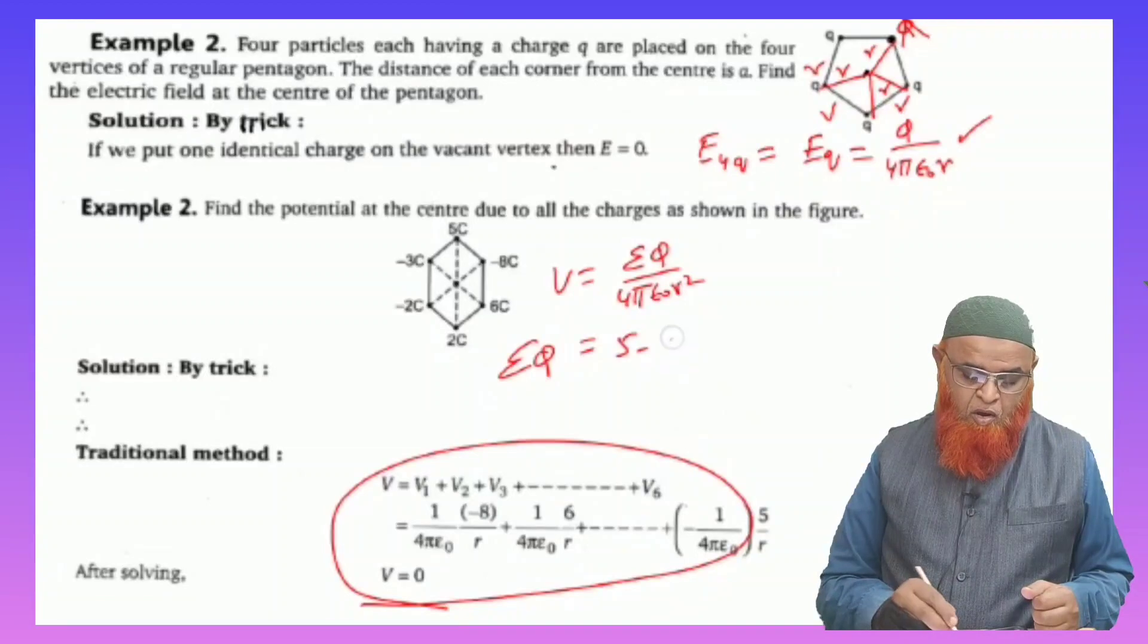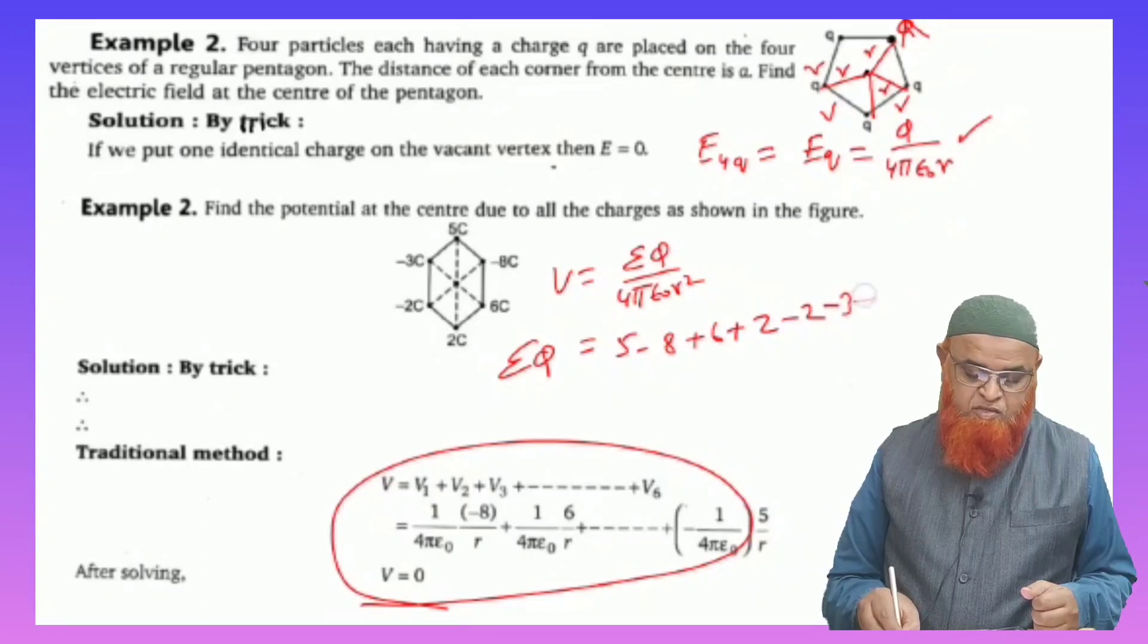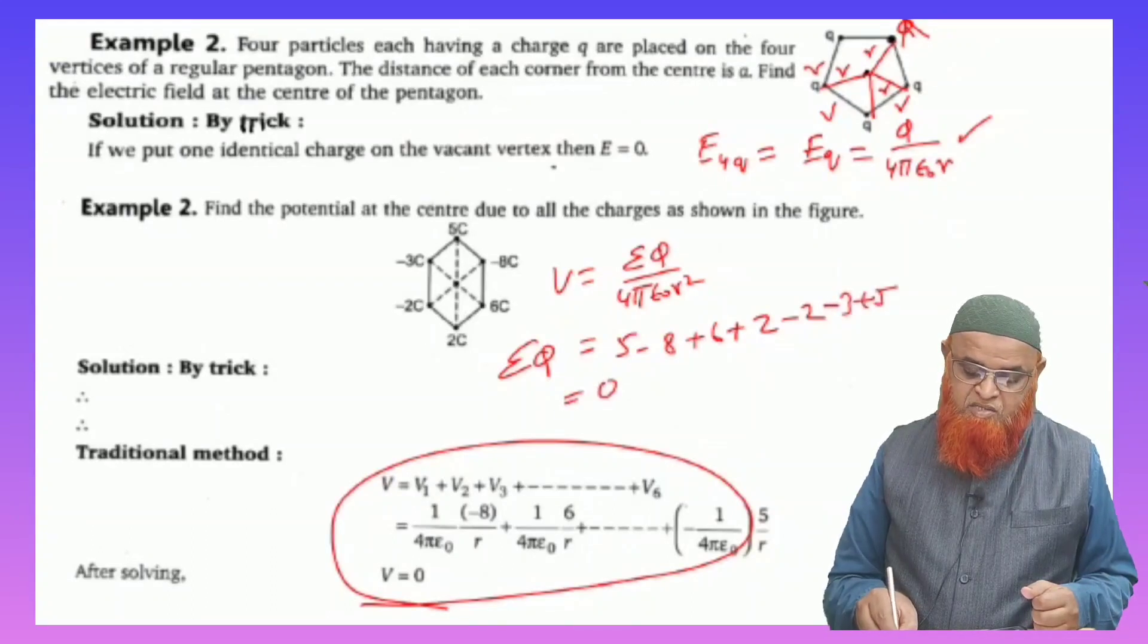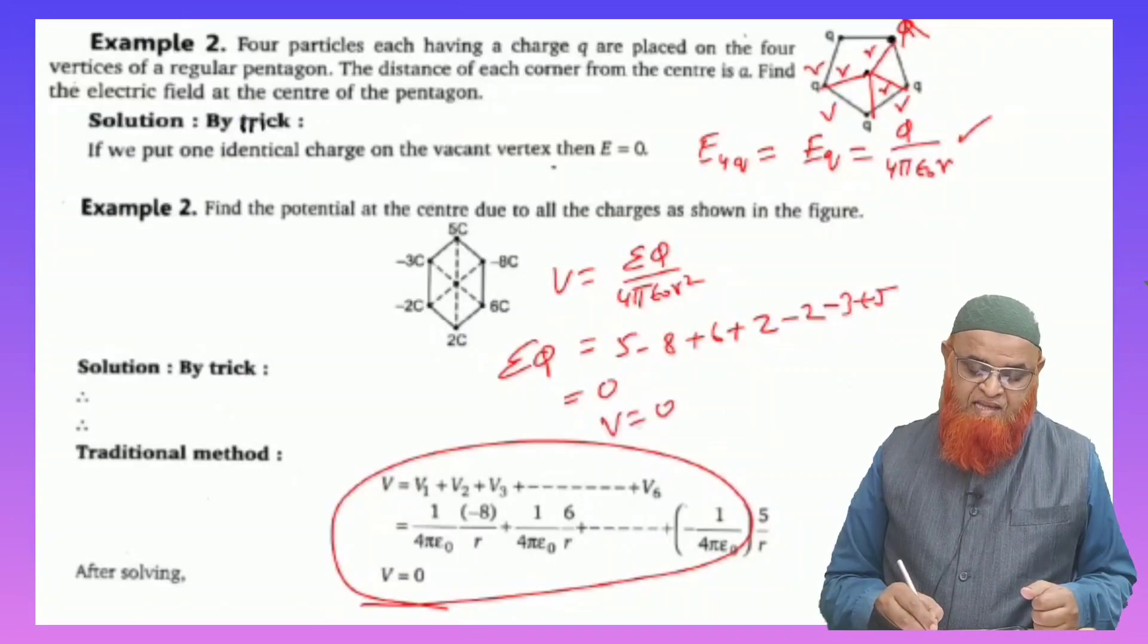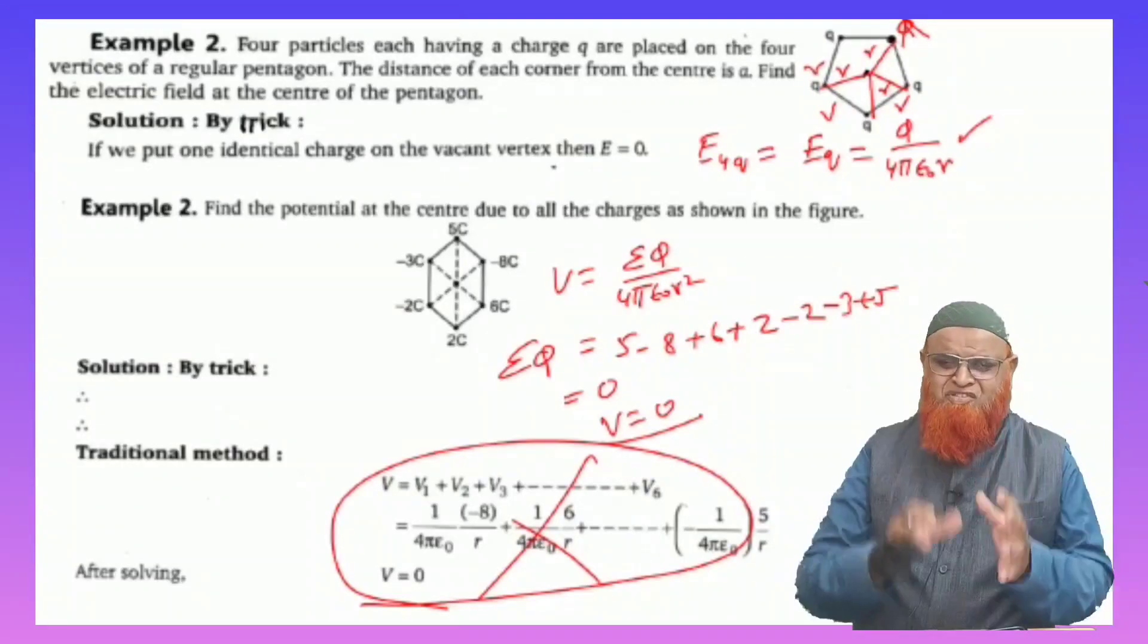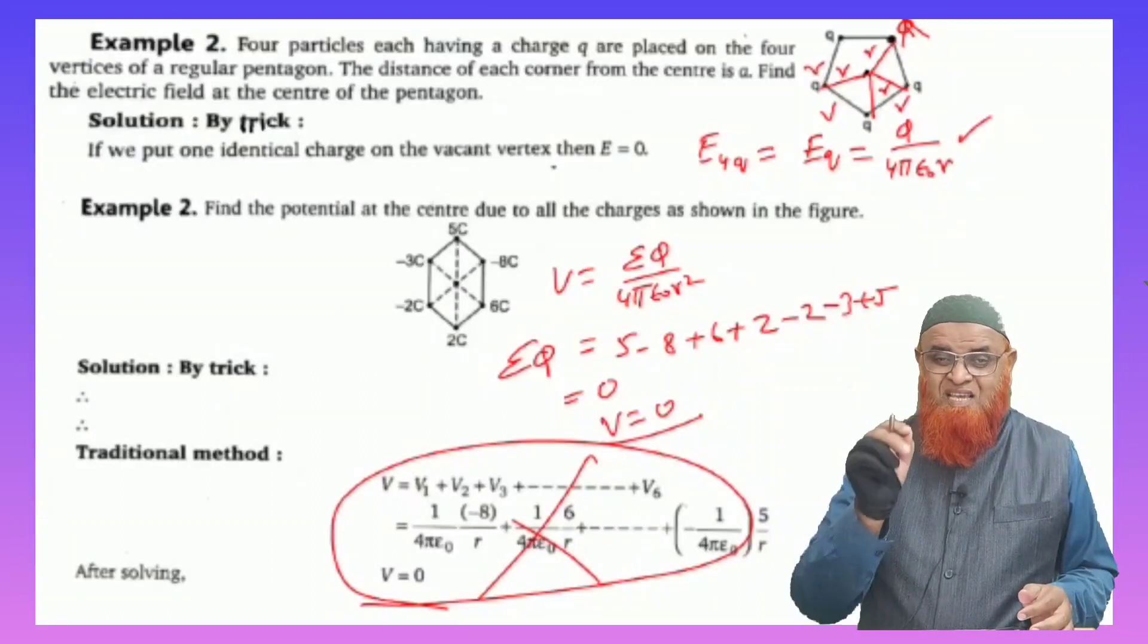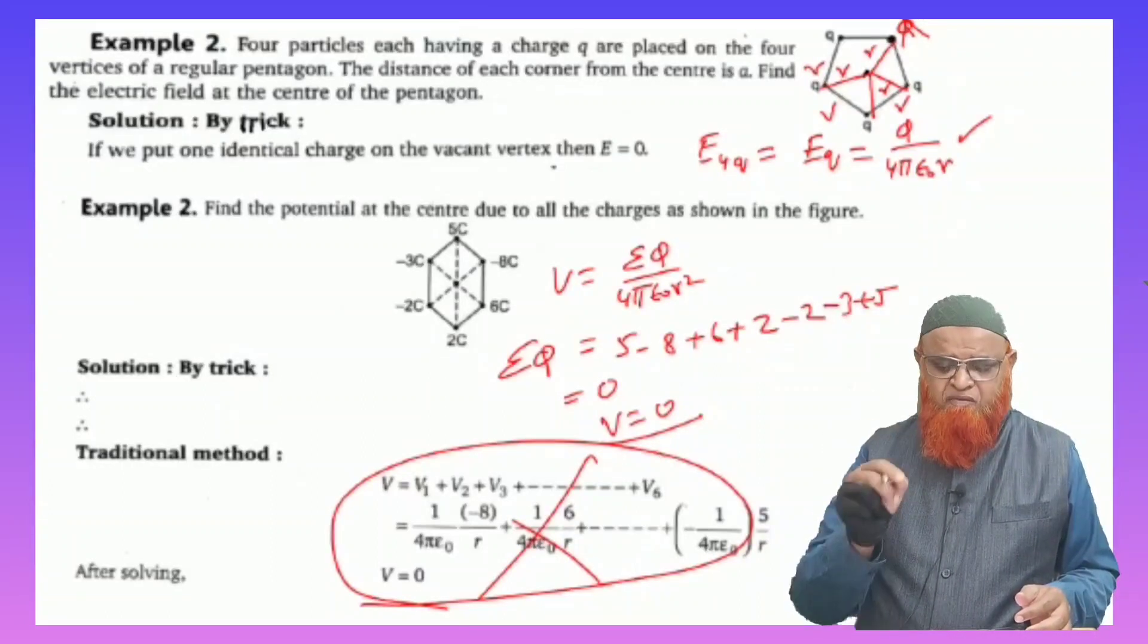How? So net charge means if you add all these charges, that is 5 minus 8 plus 6 plus 2 minus 2 and minus 3 and plus 5, you will be getting net charge as 0. Then as the net charge is 0, directly you can write net potential as 0, instead of writing this formula and adding them and wasting plenty of time.